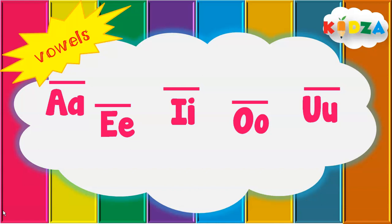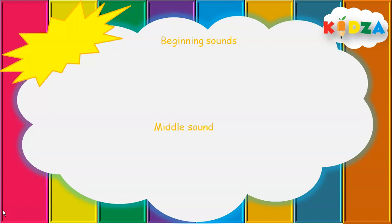Let's understand the sounds of these letters with examples. Let's start with the letter A. The short sound of A is 'a'. The long sound of A is 'A' — the letter's name itself.